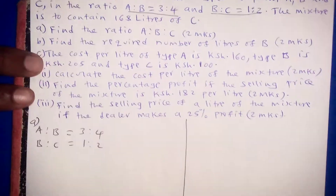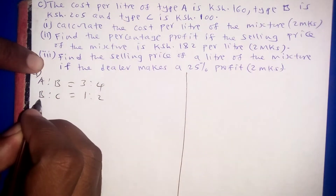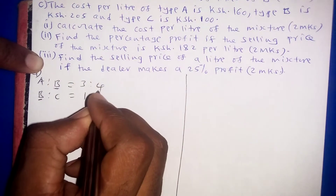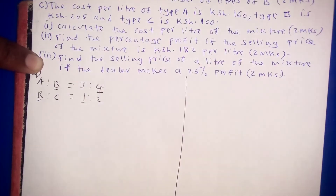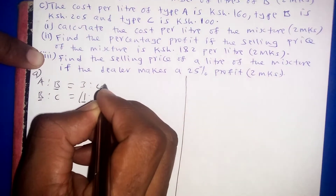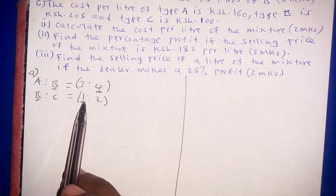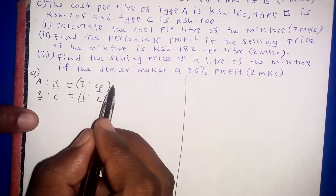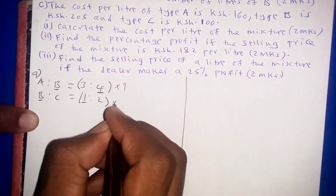To find the combined ratio, we look at the term which is common — B is common in both ratios. We make the values of B on both sides equal by multiplying. Since B is 4 in the first ratio and 1 in the second, we multiply the first equation by 1 and the second equation by 4.